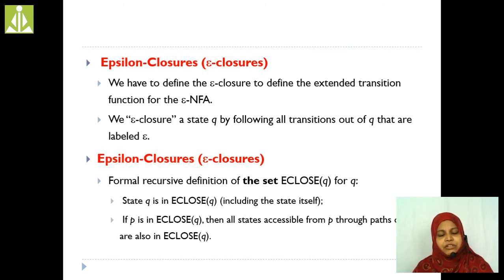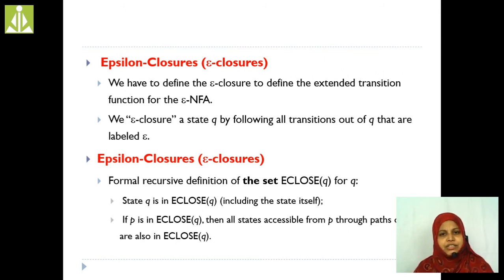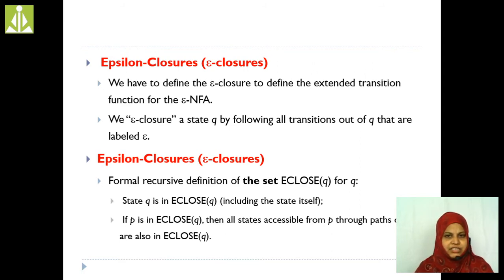NFA with epsilon moves consists of five tuples: Q, Sigma, Delta, Q0, and F. Q is the set of states. Sigma is the set of input alphabet. Delta is the mapping function: Q cross Sigma cross Epsilon into 2 power Q. Q0 is the initial state and F is the set of final states.